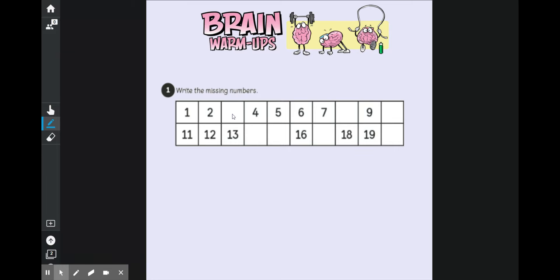So let's see if we can fill in our missing numbers. 1, 2, 3 must be missing from here. 4, 5, 6, 7, 8 must be missing from here. 9, 10. And how do we write the number 10? 1 ten and 0 ones.